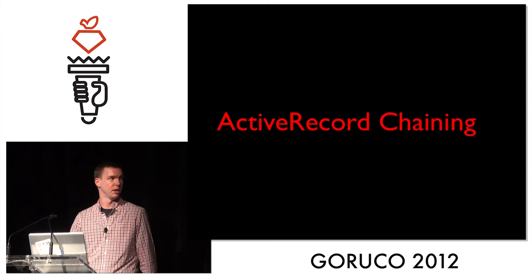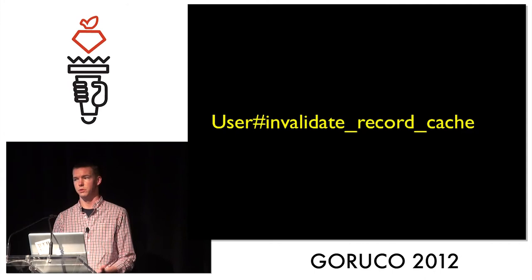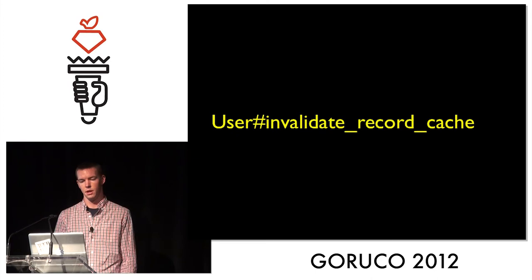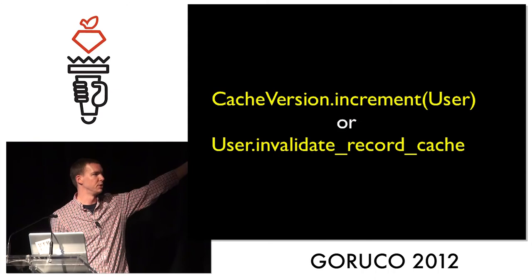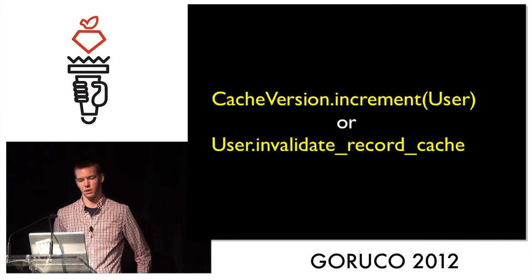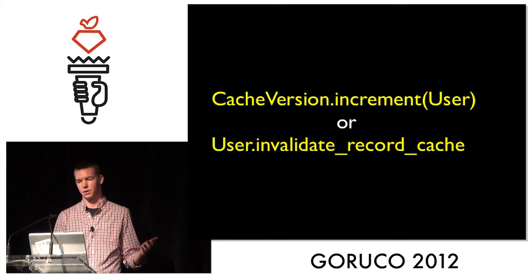Back to invalidation: it's actually really simple. You just call `invalidate_record_cache` on an individual record. This is all handled automatically for you when you save records, so this is only something you have to worry about if you are manually updating things. The other way is to invalidate an entire model — you can increment the cache version, or we've aliased that as `invalidate_record_cache` on the class itself. It basically just bumps the cache version, so all of those keys are no longer going to be found because we'll be using a version number one higher.